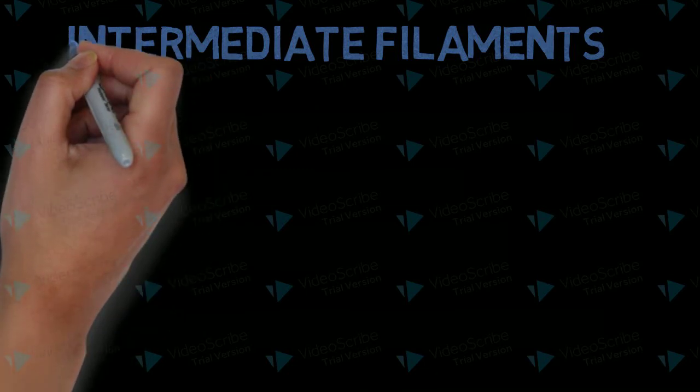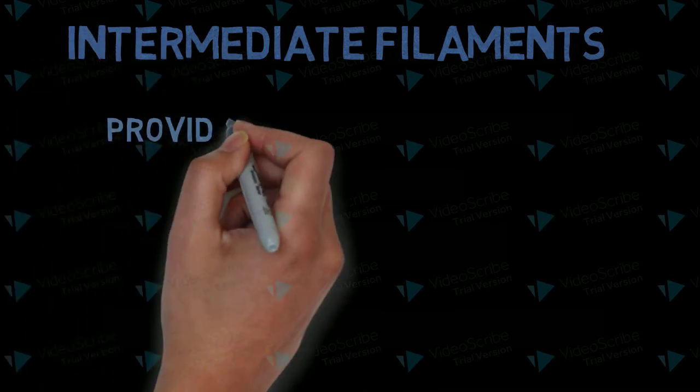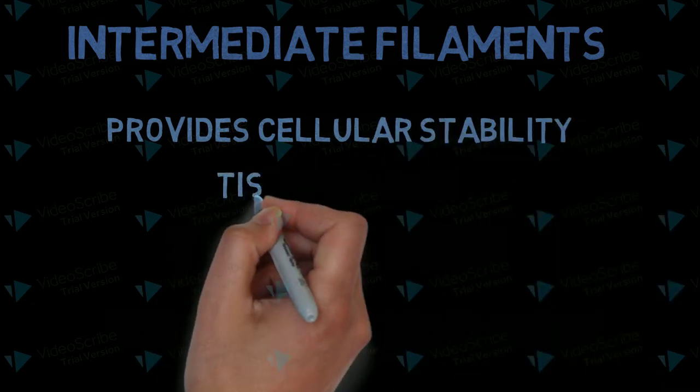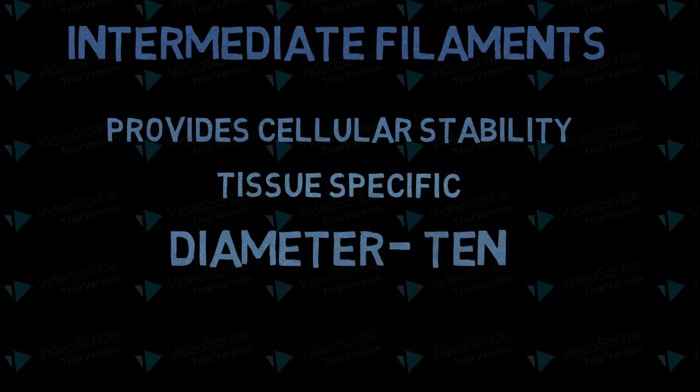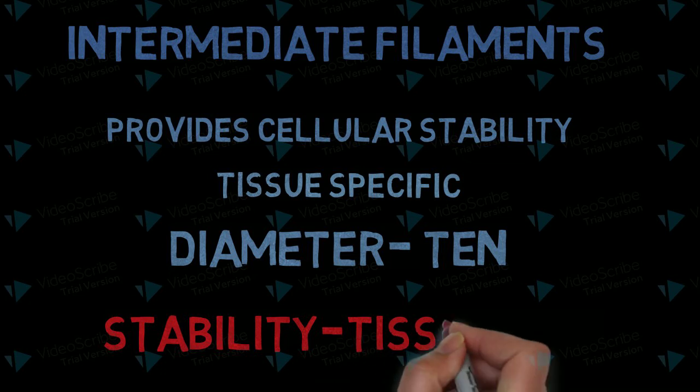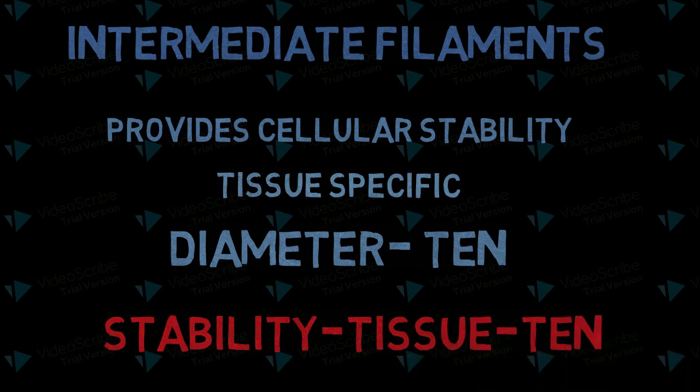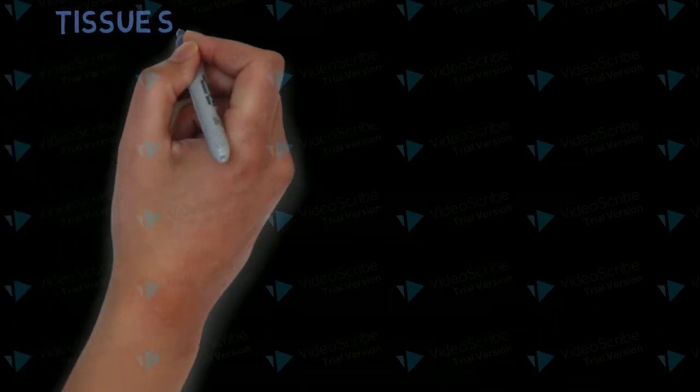Now I am going to share some points on intermediate filaments. Intermediate filaments provide cellular stability, tissue specific, diameter 10 nanometers. So you notice the 'T' rules: stability, tissue, 10. I hope now it's easy to recall the diameter of intermediate filaments. Now elaborating the tissue specificity.